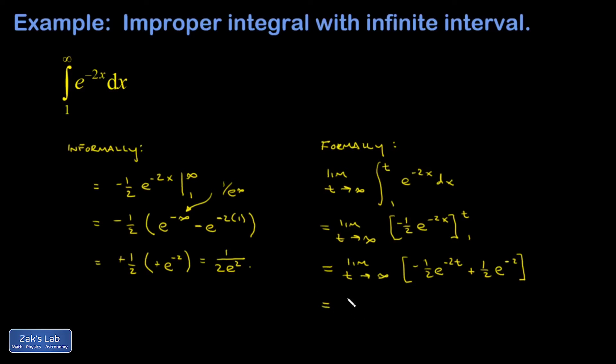That second term doesn't have any t's in it, so when I rewrite it I have limit as t goes to infinity of negative 1 half e to the negative 2t, plus the limit as t goes to infinity of the piece that has no t's in it, so that's just going to be that piece. Okay, and here's where we've kind of tried to hide our lack of formalism in introductory calculus.